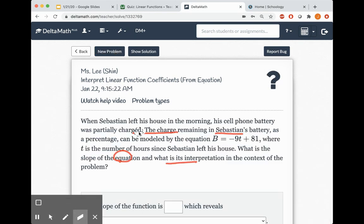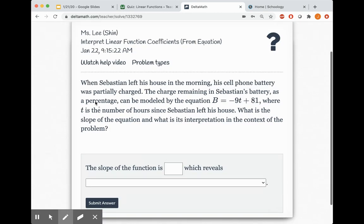Let me erase all of this. I can do one more, because I'm noticing now it's asking for the slope. Similar idea, though. So let's read it. When Sebastian left his house in the morning, his cell phone battery was partially charged. The charge remaining in Sebastian's battery as a percentage can be modeled by B equals negative 9T plus 81, where T is the number of hours since Sebastian left his house.